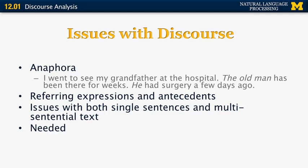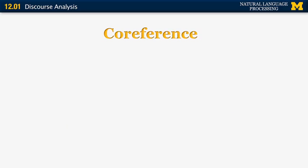What do we need to do to address this issue computationally? The first thing that we need is a model of discourse that tells us how people actually go about generating text that includes anaphora. The moment we understand how they do it, it will be easier to compute their intent.